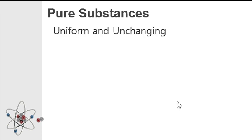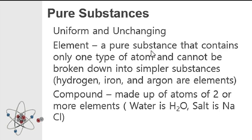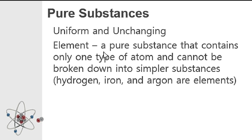Another definition of pure substances is that it is uniform and unchanging — uniform meaning the same throughout, unchanging meaning it does not change. For example, we have an element. This is an example of a pure substance. An element is a pure substance that contains only one type of atom and cannot be further broken down. Examples are iron, hydrogen, and argon. Everything you see in the periodic table are examples of elements, and those are pure substances.